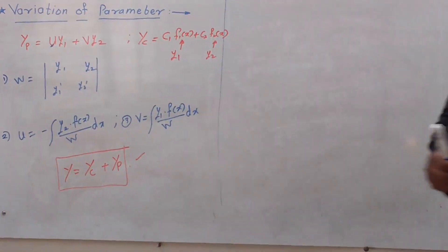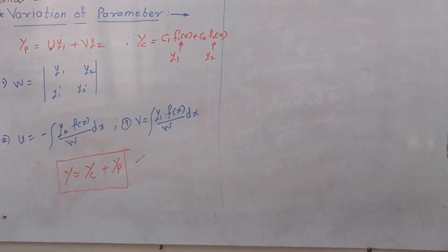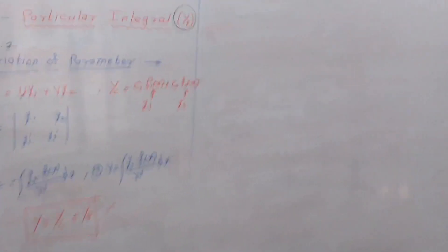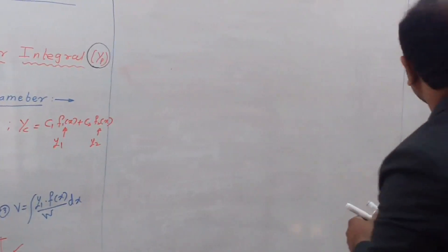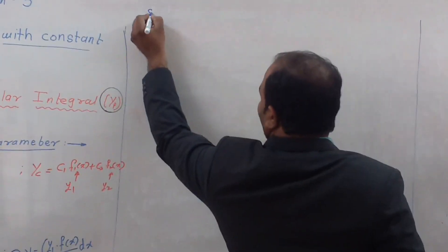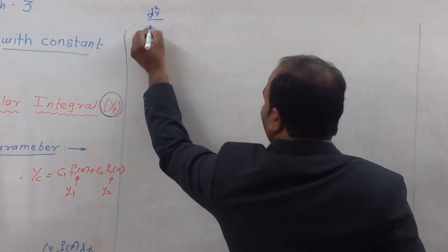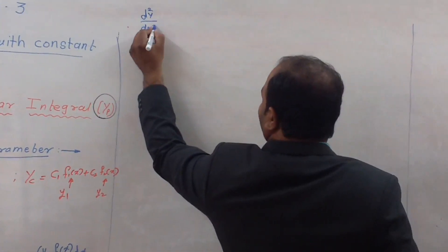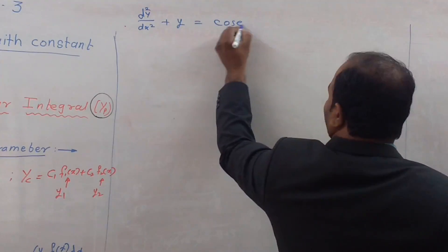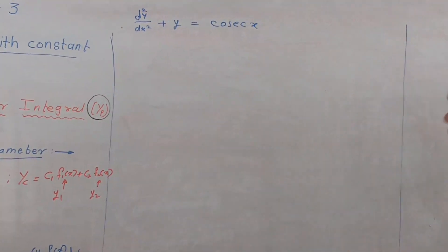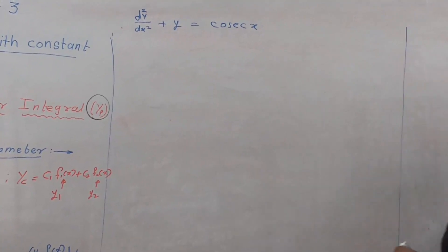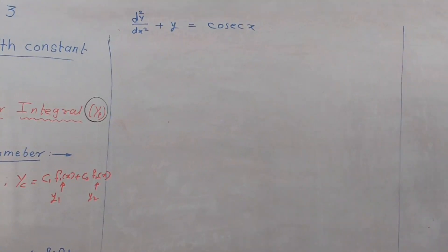Now we take one example on the basis of variation of parameter so we can understand this method very well. The equation given is: solve d²y/dx² + y = cosec x, by variation of parameter.